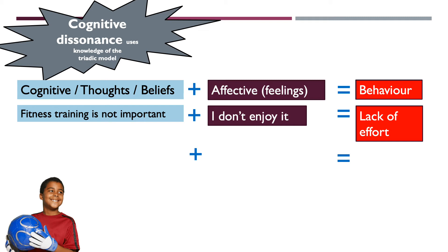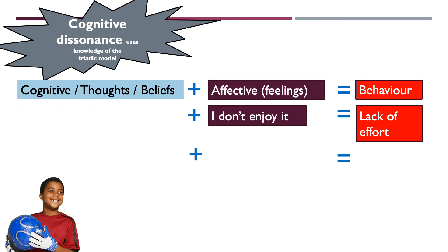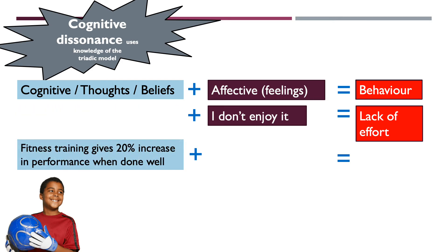This new belief usually comes through the coach and through the persuasive communication theory we looked at last time. So let's take away that initial belief and try to replace it with an evidence-based belief. Whether that evidence is entirely verifiable isn't critical, because we're talking about young players who are quite impressionable.